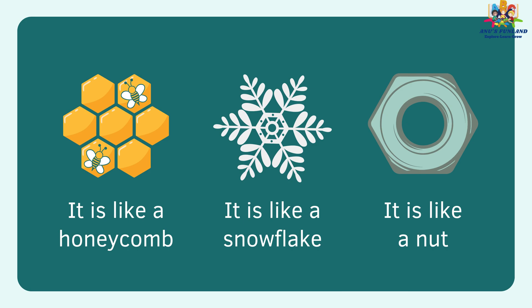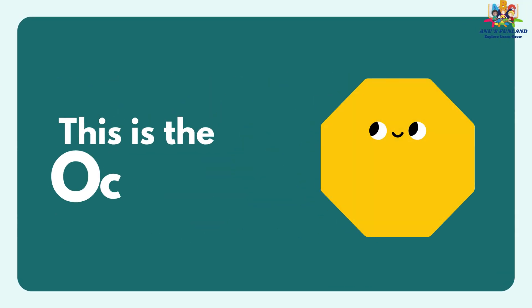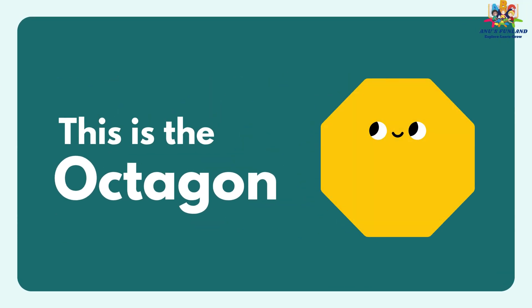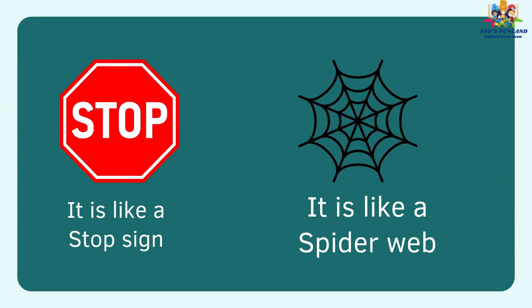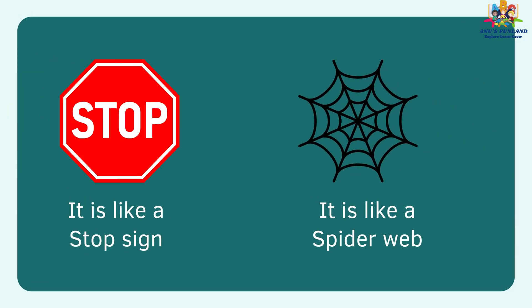snowflake and a nut. This is an octagon. Octagon has 8 sides. It is like a stop sign and spider web.